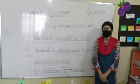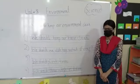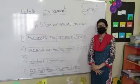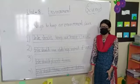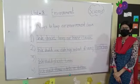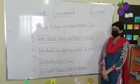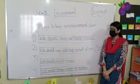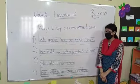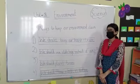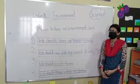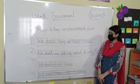So, what is environment? Environment is everything around us. It can be land, air and water. And in environment there are many things like flowers, animals, people and many things.